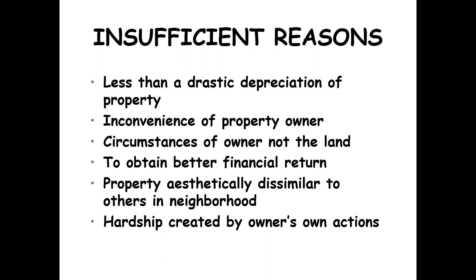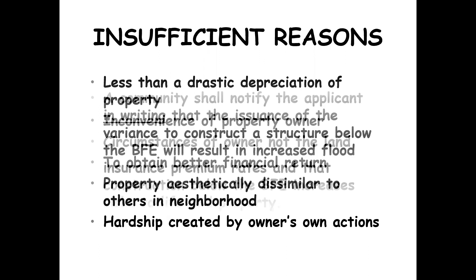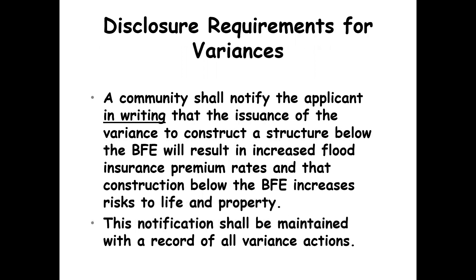Hardship is the cornerstone of a variance as far as the property — it's not something caused by the violator's own actions. Sometimes an appeals board will approve things they shouldn't, so it's really important that your appeals board knows what is required for a variance and is educated and prepared. You do have to notify them in writing that it could result in increased premium rates and risk to life and property, and then keep that notification on record indefinitely — send it certified and keep a copy. But that's only if it qualifies for a variance.